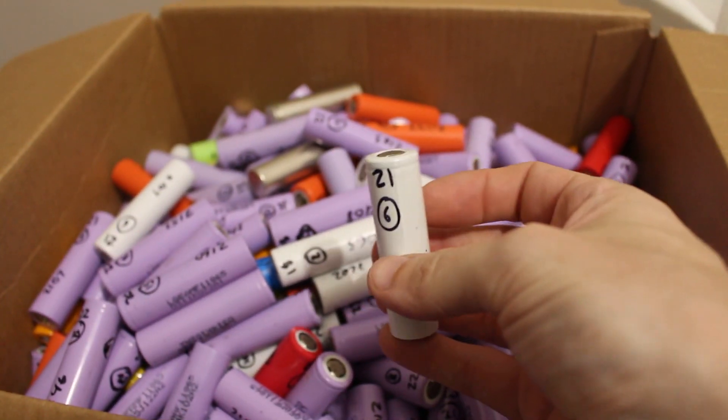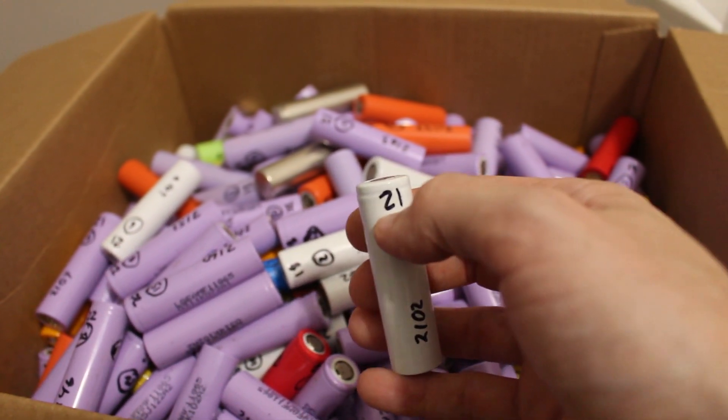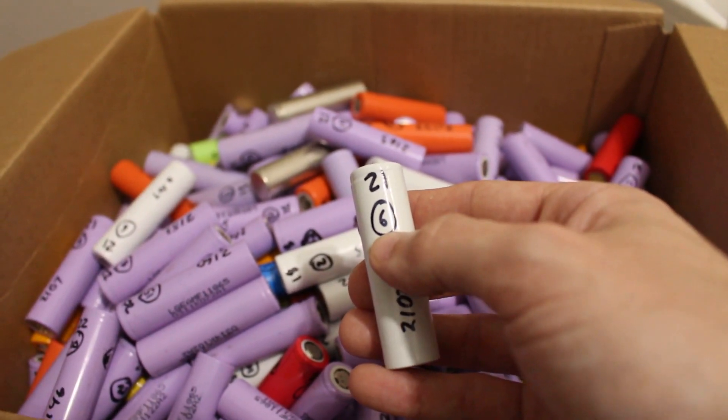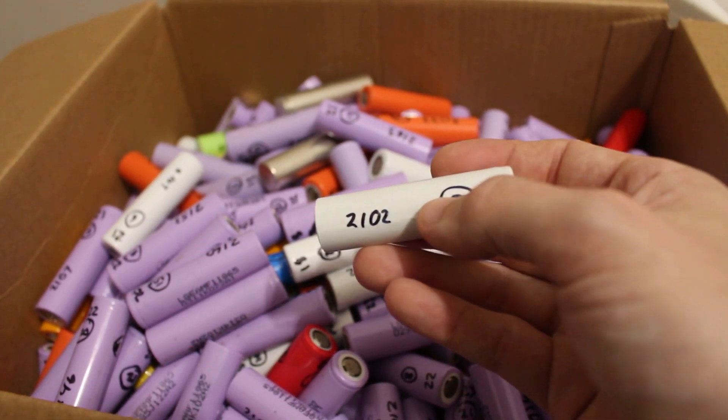And since I didn't know exactly what was going to go on, what I did was I wrote the initial starting voltage, which is 4 point whatever this number is, so 4.21. I wrote which bay it tested in, and then I wrote the final amount.